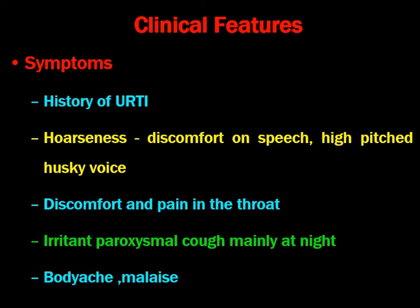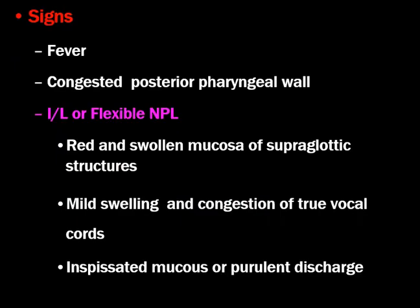Clinical features of laryngitis: symptoms include history of upper respiratory tract infection, hoarseness causing discomfort on speech, high-pitched husky voice, discomfort and pain in the throat, irritant paroxysmal cough mainly at night time, body ache and malaise. Signs of systemic inflammation and fever may be present. On indirect laryngoscopy or flexible nasopharyngolaryngoscopy, there will be red and swollen mucosa of supraglottic structures, mild swelling and congestion of the true vocal cords.